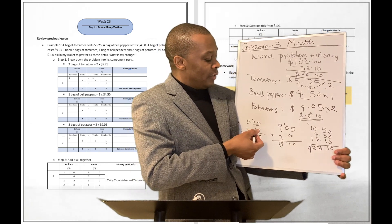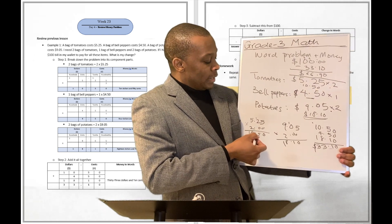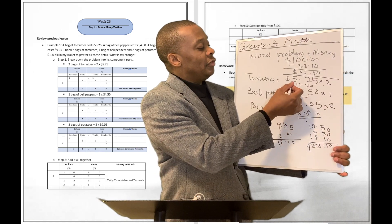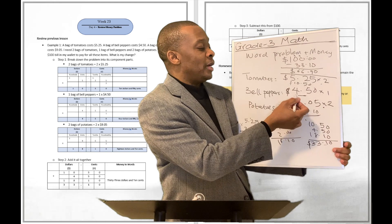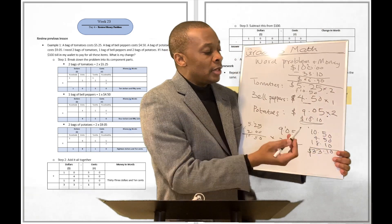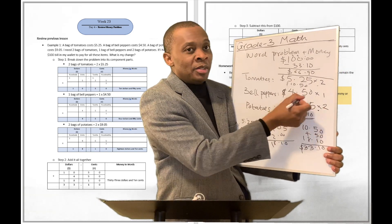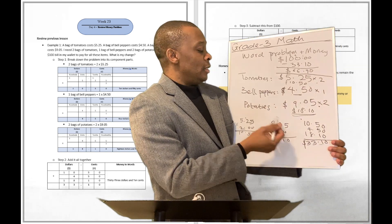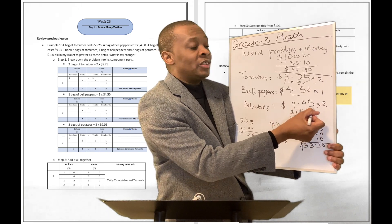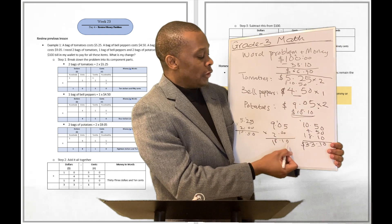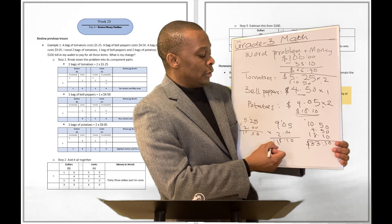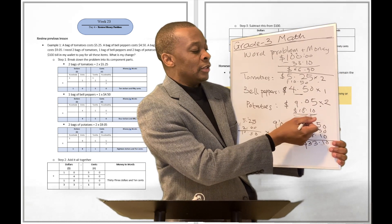So $5.25 multiplied by two is going to be $10.50. Then for bell peppers, I need just one bag, so that's $4.50 multiplied by one — which is just $4.50. Then for potatoes, I need two bags, so we multiply $9.05 by two and we get $18.10.